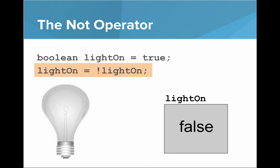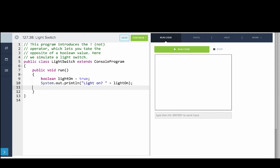Let's look at this in our code editor. Here I have a light switch program and I set lightOn to be true. Then I print out the value of lightOn and it says true.